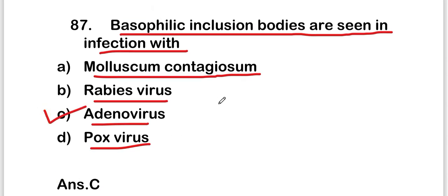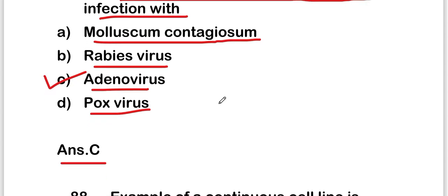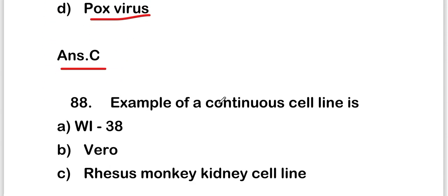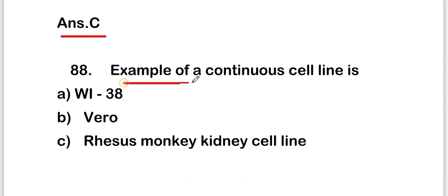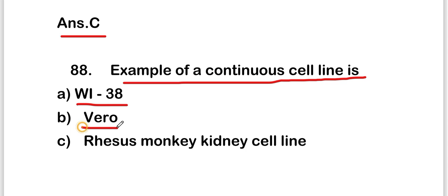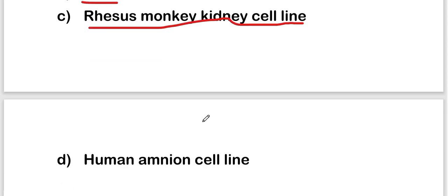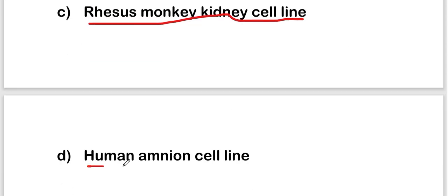The next question is: an example of a continuous cell line is option A — WI-38, option B — Vero, option C — Rhesus monkey kidney cell line, or option D — human amnion cell line? The right answer is option B — Vero is an example of a continuous cell line.